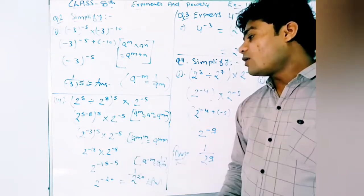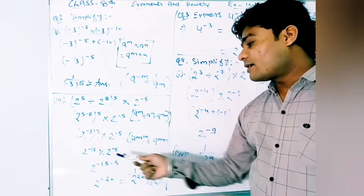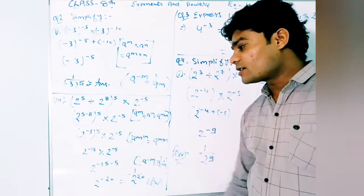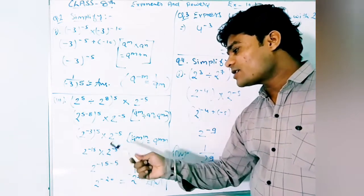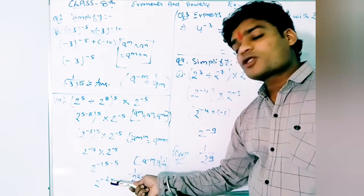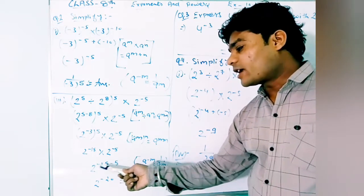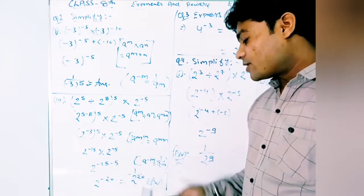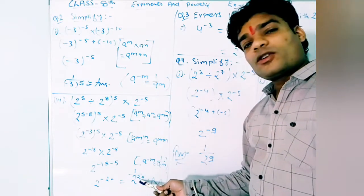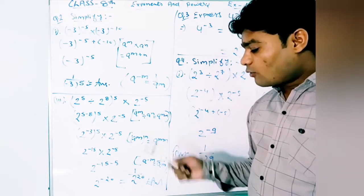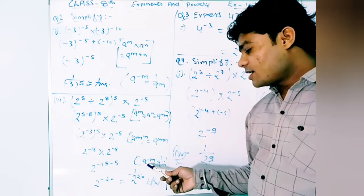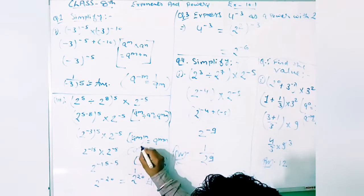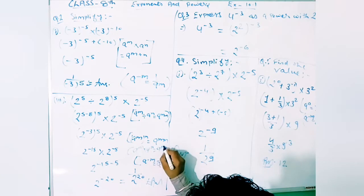Then using the law a^m into a^n = a^(m+n), we add minus 15 plus minus 5, which gives 2 raised to the power minus 20. Now we make the power positive using the reciprocal law, so the answer is 1 upon 2 raised to the power 20. In total we used four laws: division, multiplication, reciprocal, and the addition of powers law.